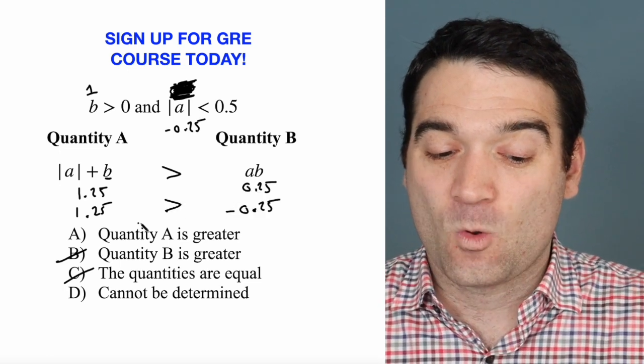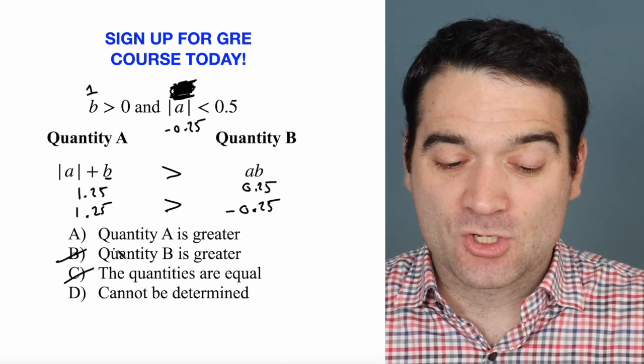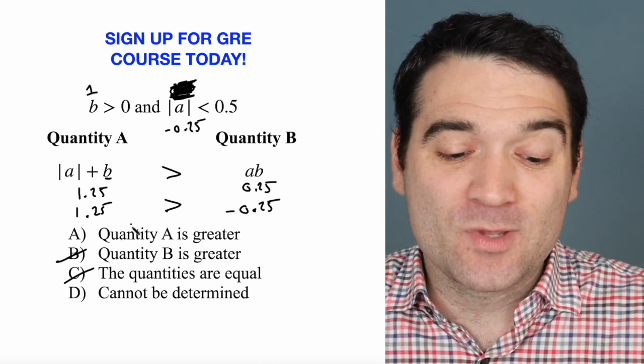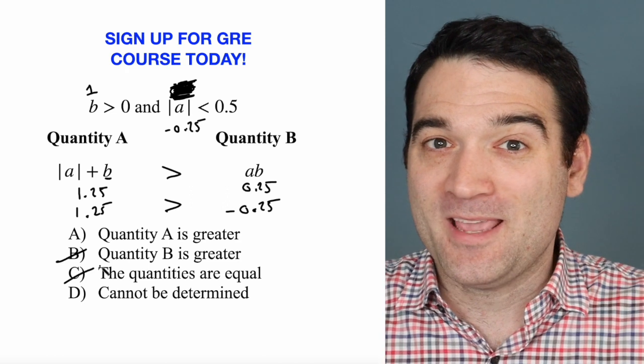So we're even worse off. Quantity A is still greater again. So we've found two cases where quantity A is greater than quantity B.